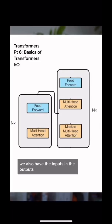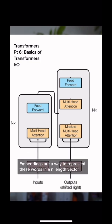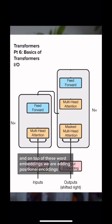We also have the inputs and the outputs. All the inputs that go in either the encoder or the decoder are embedded. Embeddings are a way to represent these words in an n-length vector.